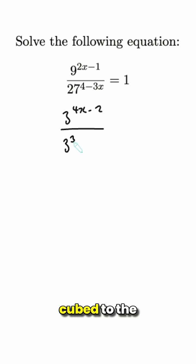This is 3 cubed to the 4 minus 3x, so again, this is 3 to the 3 times 4 minus 3x, which is 3 to the 12 minus 9x.